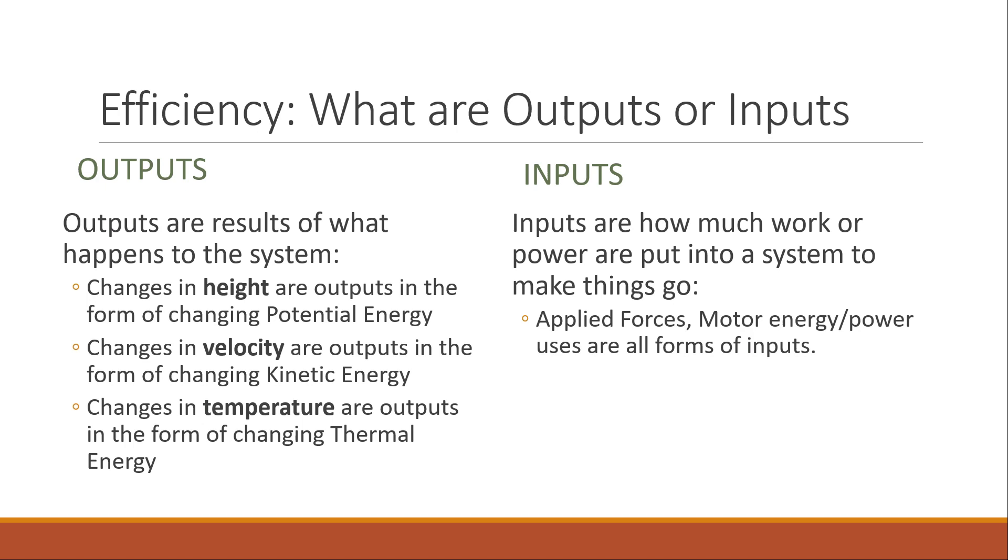What's really important for us is determining what are the outputs and what are the inputs. Outputs are what happens to the system. It's the result. This is what happens as things happen to the system. So if something changes its height, that change in height is an output in the form of changing potential energy.